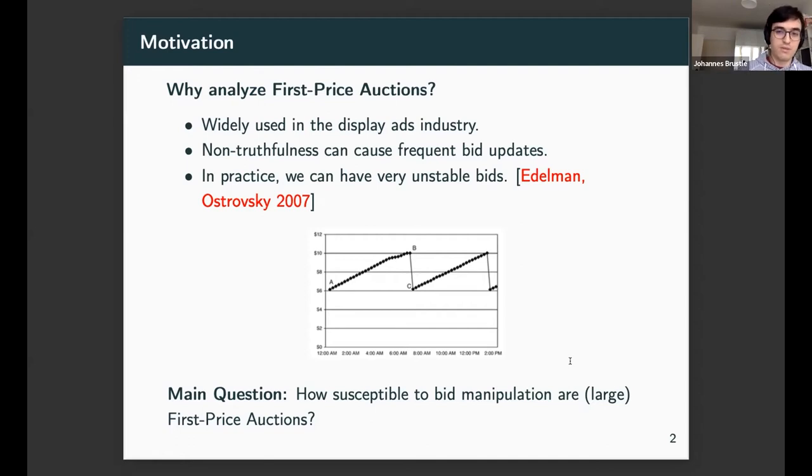It has been observed quite early on by Edelman and Ostrovsky that this can yield very unstable bidding behavior. In an early work where they got data from search engine Overture, which was selling ad slots using first-price auctions, the prices varied just within a short period between $6 and $10. Edelman and Ostrovsky concluded this could not have been due to a sudden change in value of the ad slot, but must have been due to strategic bidding. In light of this, our main question is how susceptible to bid manipulation are large first-price auctions when there's a large number of bidders.